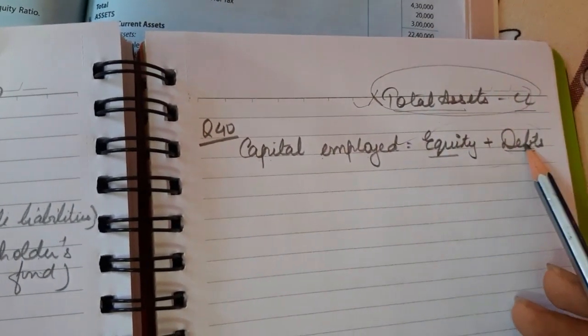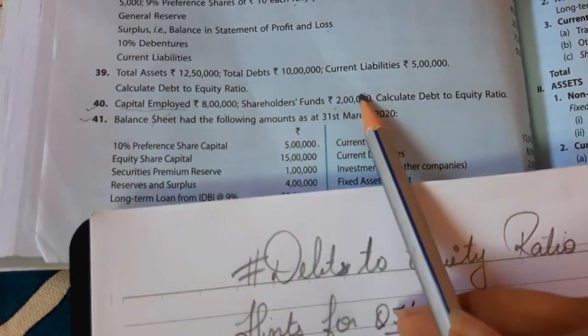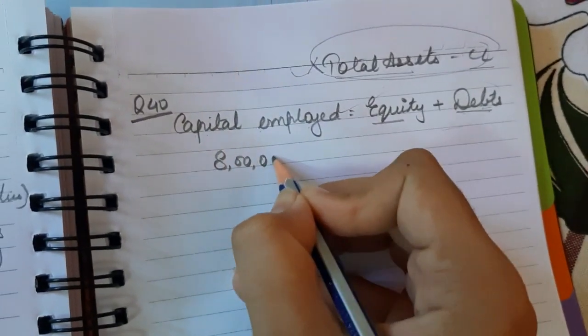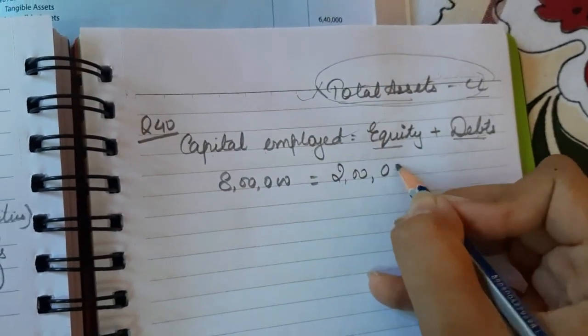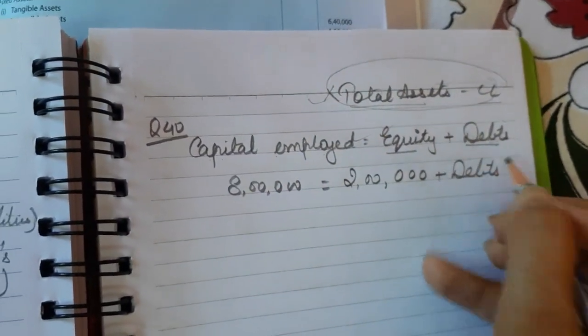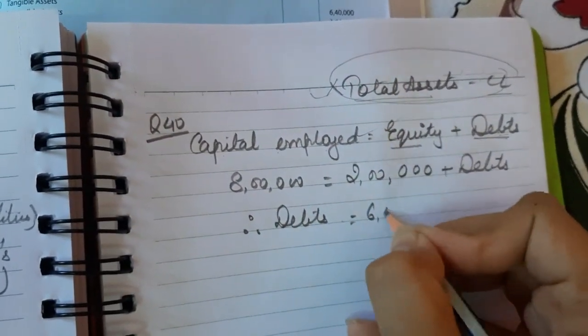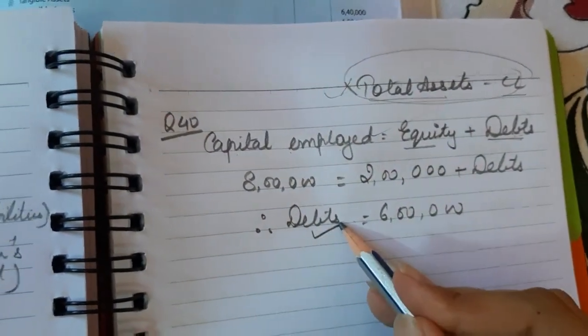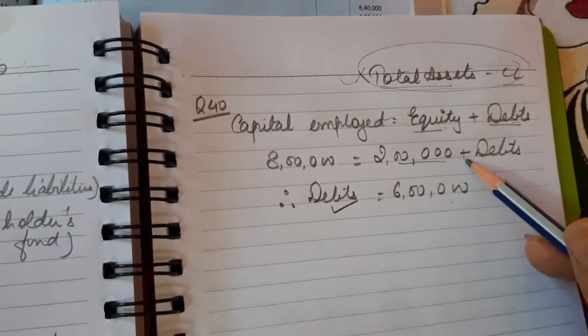Since no data on total assets or current liabilities is given, we use capital employed = equity plus debts. Capital employed is 8 lakh and shareholders fund (equity) is 2 lakh. So 8 lakh = 2 lakh + debts, giving debts = 6 lakh. Now with debts 6 lakh and equity 2 lakh, debt-to-equity ratio = 6 lakh divided by 2 lakh.